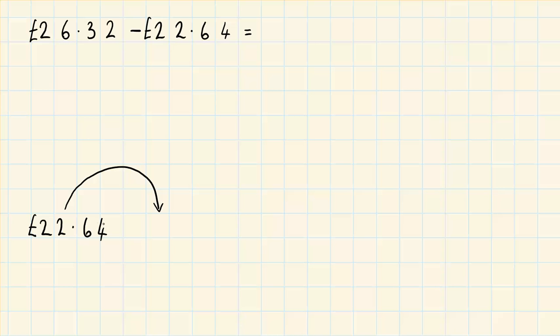So how many pennies do I add to 64 to get to the next 10p which is £22.70? Well that would be 6p because my number bond with 4 is 6. So now I'm on £22.70.